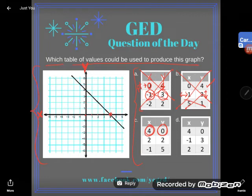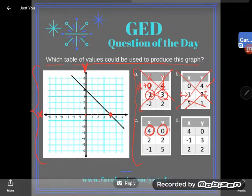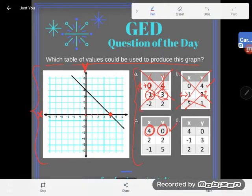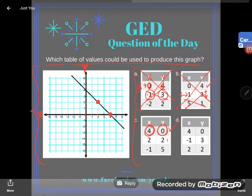And that's on my line, good. Now let's check out (2,2). So 1, 2 horizontal, 1, 2 vertical. That's also on my graph. Oh, good sign, I'm liking this.